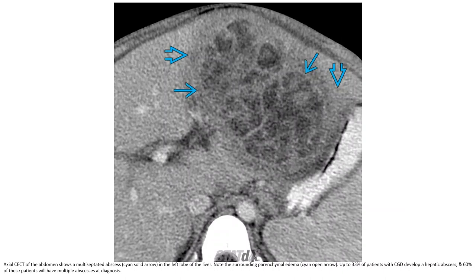Contrast-enhanced CT of the abdomen shows a multiloculated abscess in the left lobe of the liver. Note the surrounding parenchymal edema. Up to 33% of patients with chronic granulomatous disease develop a hepatic abscess, and 60% of these patients will have multilocular abscess at diagnosis.